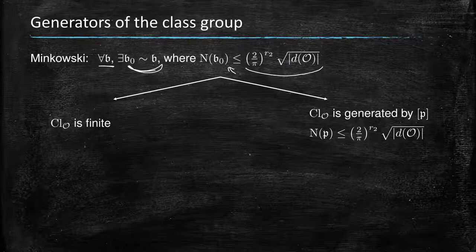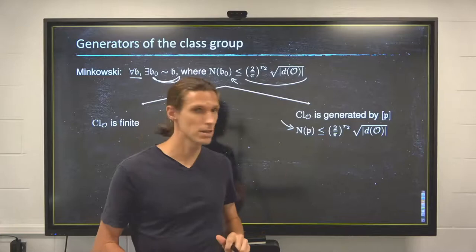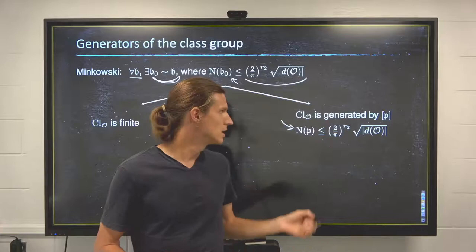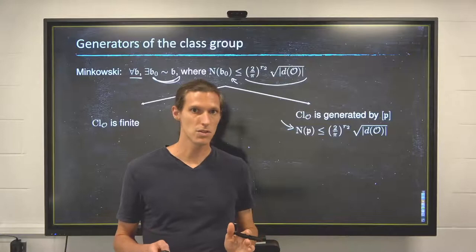It also means that the class group is generated by the P's that satisfy this inequality on the norm. Now, for algorithmic purposes, this bound here on the primes and the norm of the primes that generate the class group is pretty bad because it's of the shape, it's a square root of delta, where delta is the discriminant, so that's essentially exponential in the size of the input.